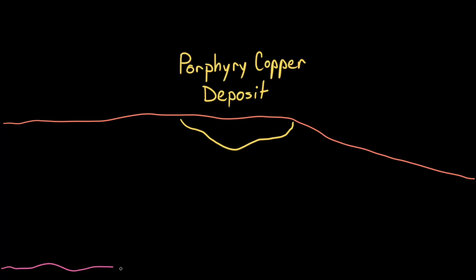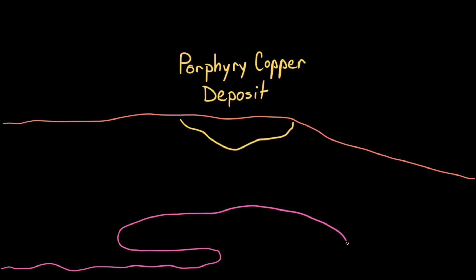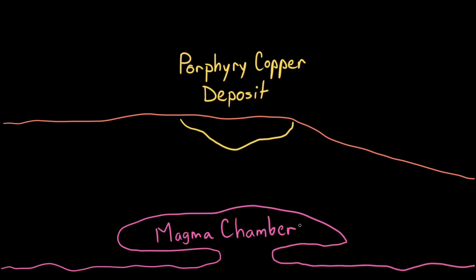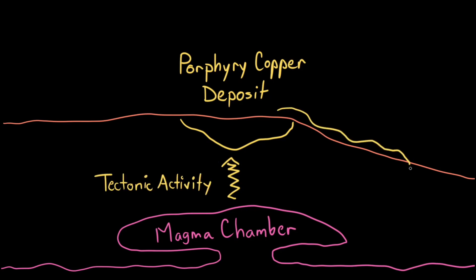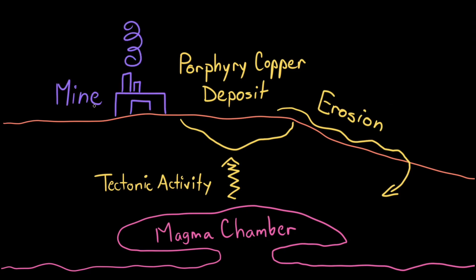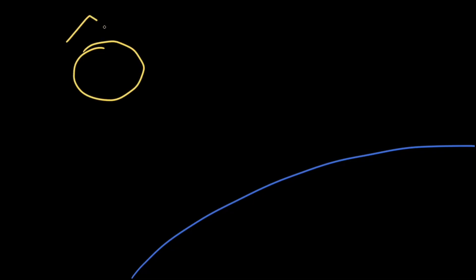Porphyry copper deposits follow the same slow life cycle as many other metal ores, forming in magma chambers below the crust, then uplifting towards the surface through tectonic activity. Once exposed to the elements, the deposits can experience weathering and erosion, which allows them to gradually recycle back into the earth, unless people find and mine them first.